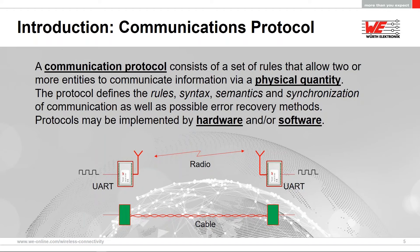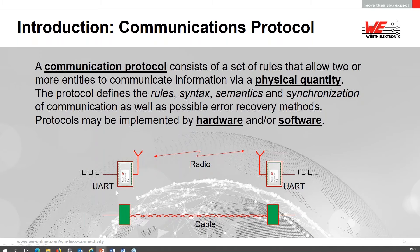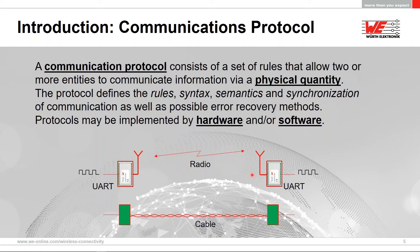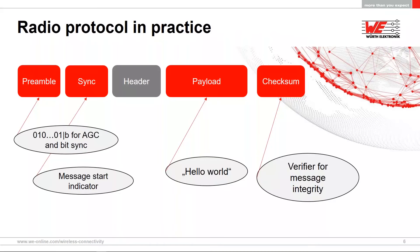Communication protocols control and regulate radio transmissions. A protocol defines the rules, syntax, semantics, and synchronization of communication and can be implemented in hardware and/or software. On a simple cable you'd just have zeros and ones, but radio is more complex — you need an antenna on both sides. What we actually send via radio includes a preamble for synchronization, a sync indicator, a header with address and destination information, the actual payload, and finally a checksum to verify message integrity.